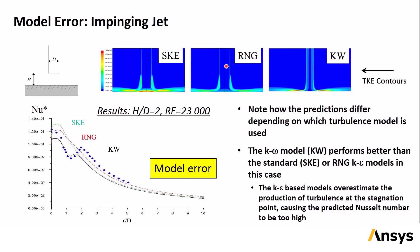In particular, what happens here is that the k-epsilon models overestimate the production of turbulence at the stagnation point, which causes the Nusselt number to be over-predicted near the stagnation point, which we see in the plot on the left. Studies like this one are important because they can help to show what model is likely to have the lowest error in similar flows.